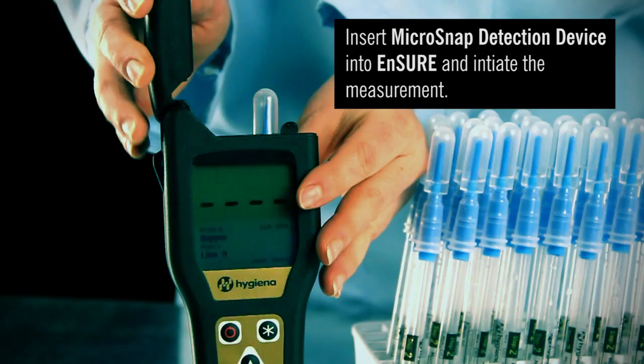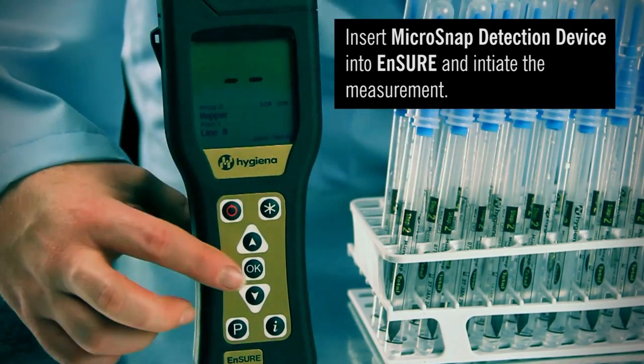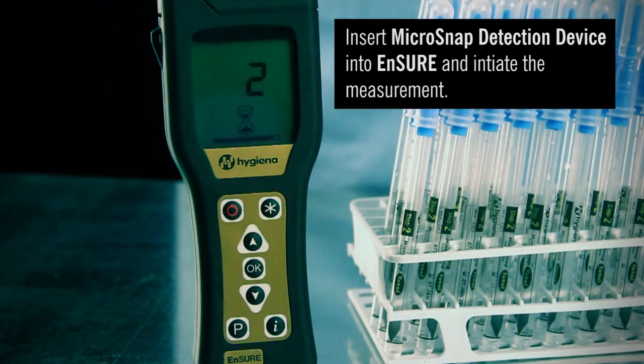Immediately insert the MicroSnap detection device into the read chamber. Close the lid and press OK to initiate measurement. Results will be displayed in 15 seconds.